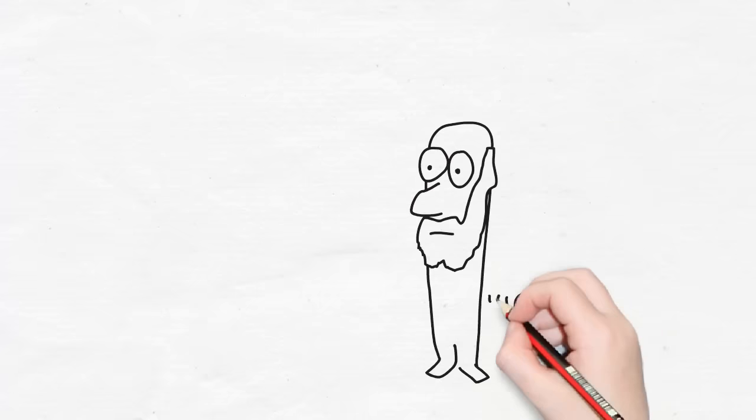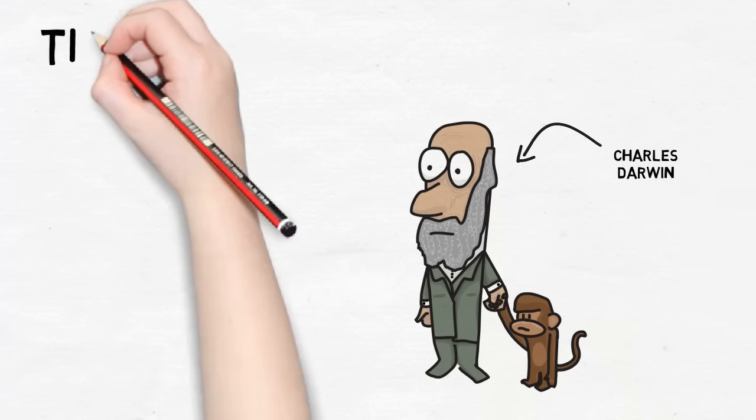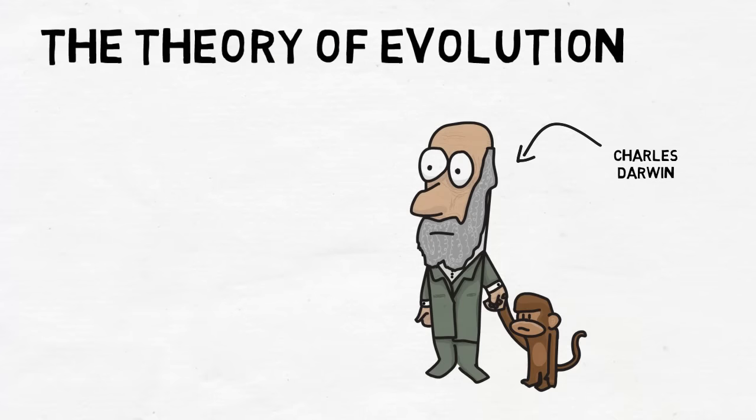Charles Darwin was a famous scientist in the 1800s. He was famous because he came up with an idea that changed the way we think about life on Earth forever: the theory of evolution.